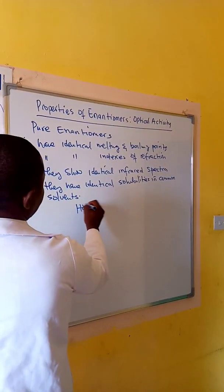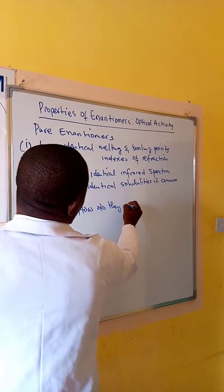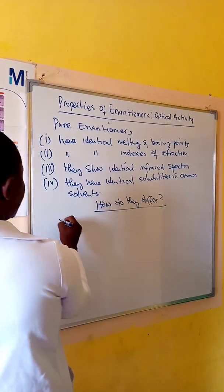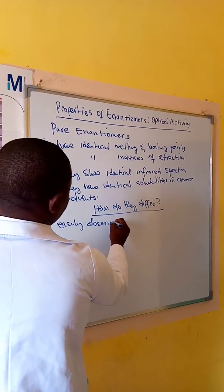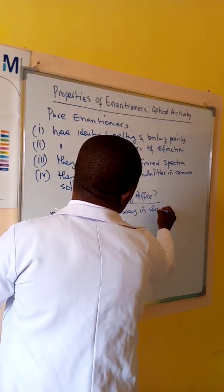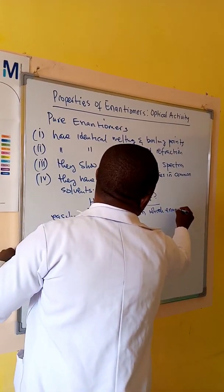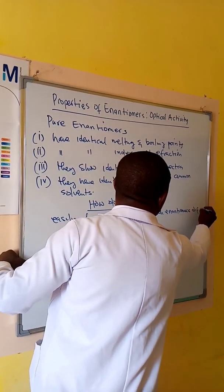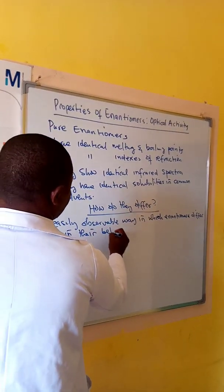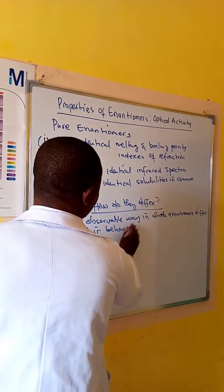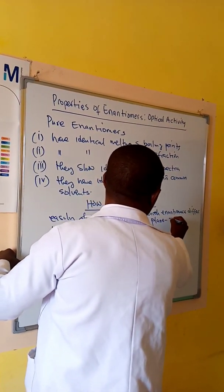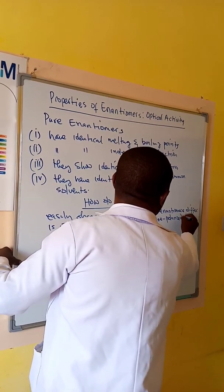But how do they differ? One observable way in which enantiomers differ is in their behavior toward plane polarized light.